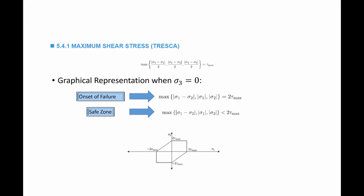If sigma 3 is equal to 0 — the third principal stress is equal to 0 — I have what we call a plane state of stress. The material will fail when the maximum of (sigma 1 minus sigma 2), sigma 1, or sigma 2 is equal to tau max. I just manipulated this equation knowing that sigma 3 is equal to 0, so either of these conditions will mean the onset of failure.